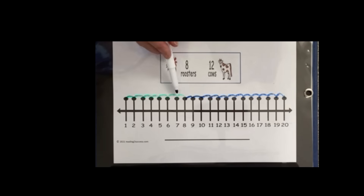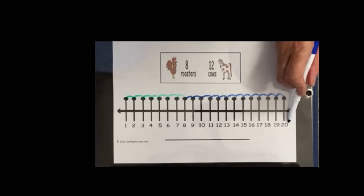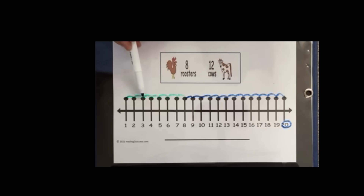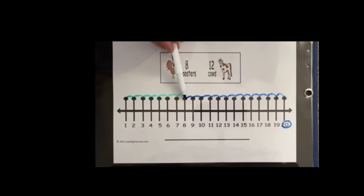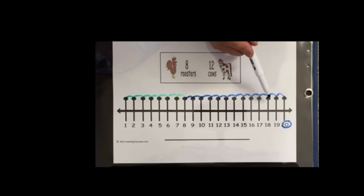So 8 plus 12 equals 20, so we'll circle that. To make sure, let's count them all together: 1, 2, 3, 4, 5, 6, 7, 8, 9, 10, 11, 12, 13, 14, 15, 16, 17, 18, 19, 20.